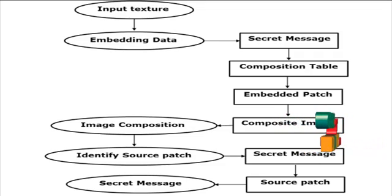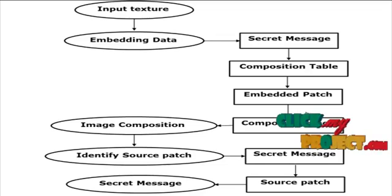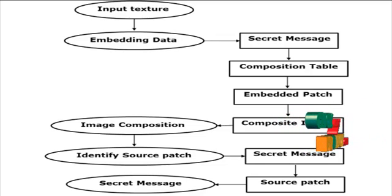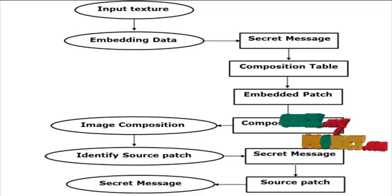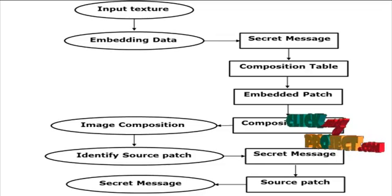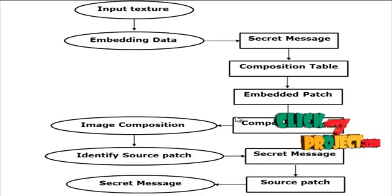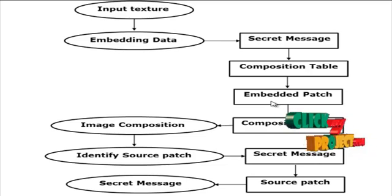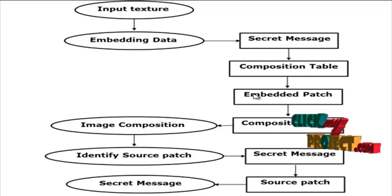The patches which contain the first part of the message are placed in a location, and in the index matrix the corresponding location is denoted as 1, and the process runs on. The locations where the secret images were not present are denoted in the index table as -1.